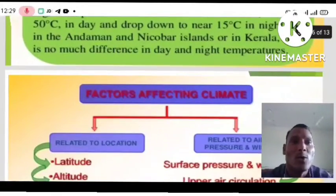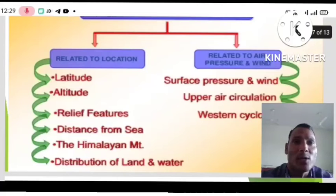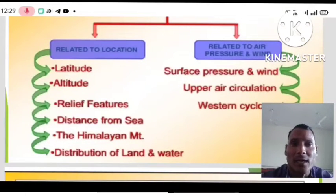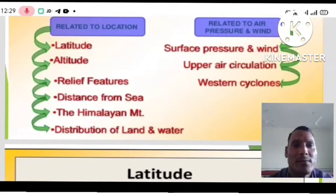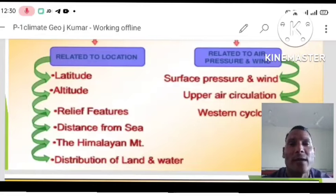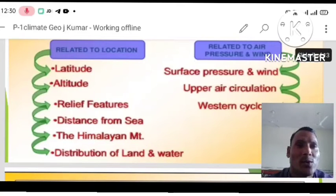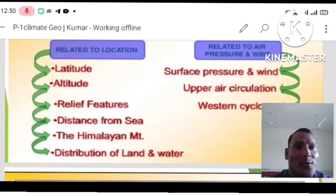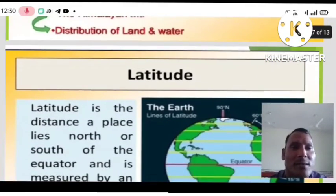Now, students, we will discuss the factors affecting climate. Related to location: first is latitude; second is altitude and relief features; third and fourth is distance from the sea; fifth is the Himalayan mountains; sixth is distribution of land and water. Related to air pressure and wind: first is surface pressure and wind; second is upper air circulation; third is western cyclones.